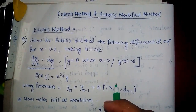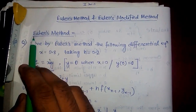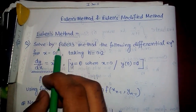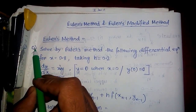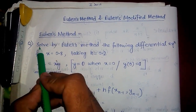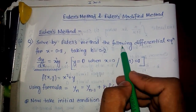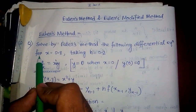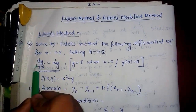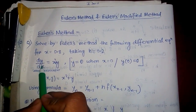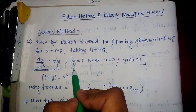Hello friends, welcome. My name is Shimon Mondol. Today I am discussing Euler's method. Here we take an example: solve by Euler's method the following differential equation for x equals to 0.8, taking h equals to 0.2. dy/dx equals to x squared plus y, and the initial condition